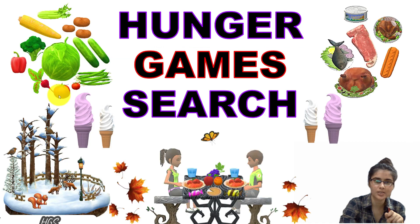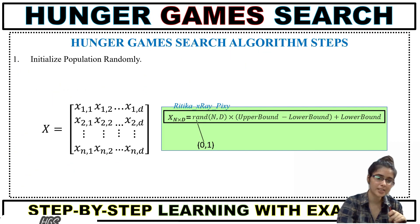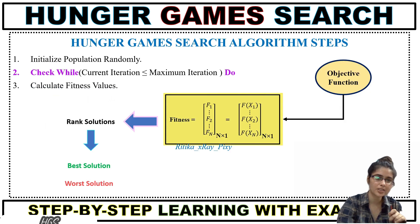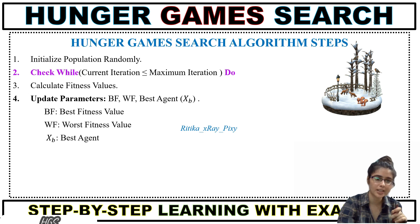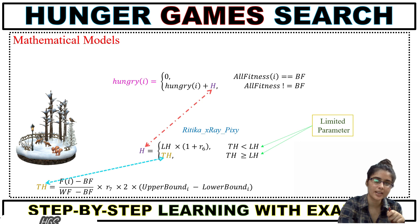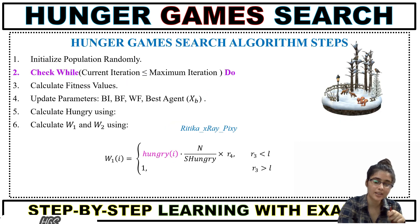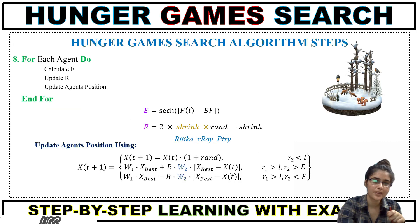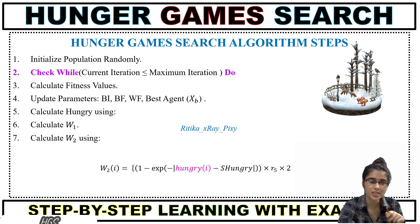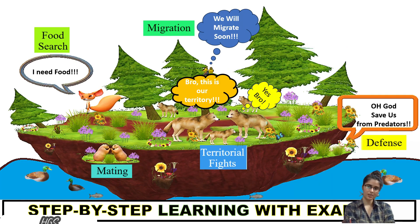In summary: initialize the population for each agent, check the stopping condition, calculate fitness values, update parameters (best agent, fitness values), calculate virtual hunger values, calculate the hunger weight (bait), update positions in the search space, then repeat the loop until the stopping condition is met. When the stopping condition is met, stop and display the best solution. That's all about this video — if you have any questions, comment below. Thanks for watching.